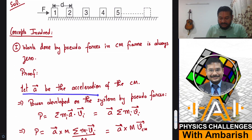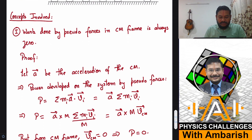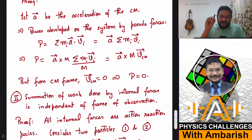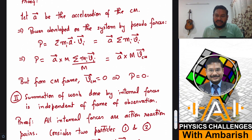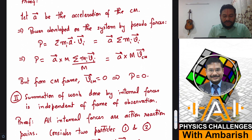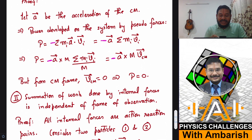Why is that? Let A be the acceleration of center of mass — I'm working from the center of mass frame. What will happen to the power developed by all the pseudo forces acting on different particles? Let Mi be the mass of the ith particle and Vi be the velocity of the ith particle as seen from the center of mass frame. The pseudo force on the ith particle is minus Mi times A. So the power is minus Mi A dot Vi, and the total power by pseudo forces is the summation of all these terms.